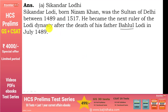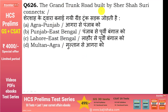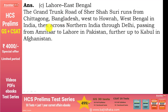The Grand Trunk Road built by Shershah Suri connects Lahore and East Bengal। यह Chittagong, Bangladesh से start होती है, West Bengal से होते हुए Northern India cross करती है, Delhi, Amritsar से pass होते हुए Lahore, Pakistan में जाती है और Kabul, Afghanistan तक पहुँचती है। Shershah Suri एक बहुत efficient administrator था।